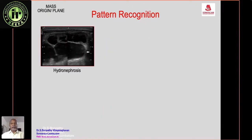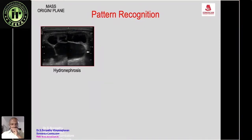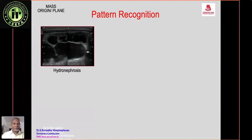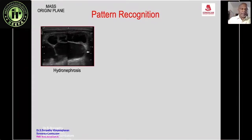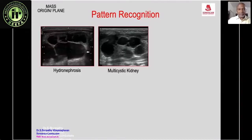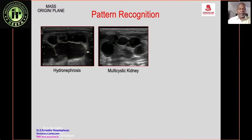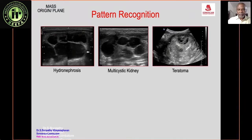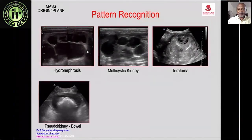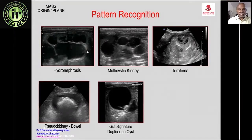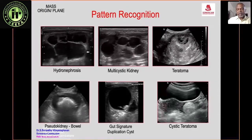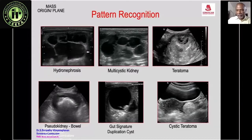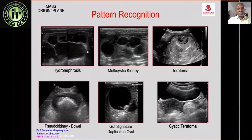The first sign is pattern recognition. After viewing many scans, the diagnosis becomes apparent from the pattern alone. For example, hydronephrosis shows dilated calyces and pelvis; multicystic kidney shows multiple non-communicating cysts of varying size with no parenchyma. A mass with calcifications suggests teratoma; a pseudokidney appearance indicates a bowel mass; a cyst with gut signature in the wall suggests duplication cyst; an echogenic adnexal mass suggests cystic teratoma.